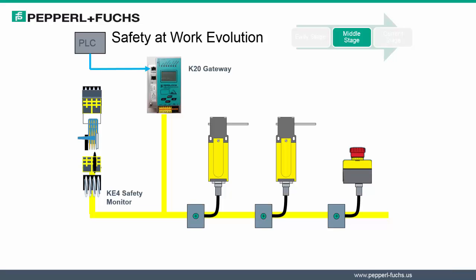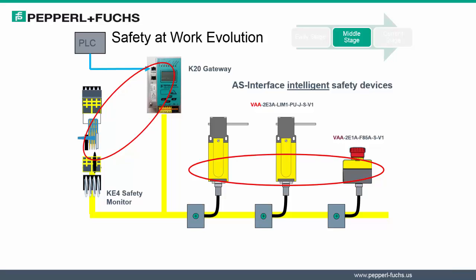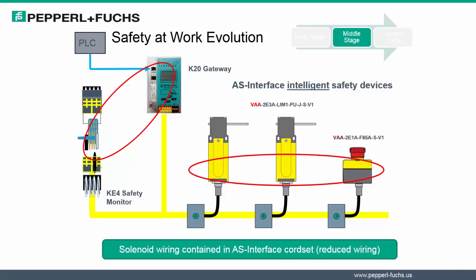Now let's see what changed in the middle stage of this evolution. In the middle stage of the Safety at Work evolution, the AS Interface gateway was still separate from the safety monitor. However, now the devices that were originally non-intelligent safety devices transitioned to intelligent safety devices. Therefore, the devices were addressed and the modules connecting to the AS Interface cable were passive devices and non-addressable. Solenoid wiring was now contained in the cord set, further reducing the wiring of the safety system.